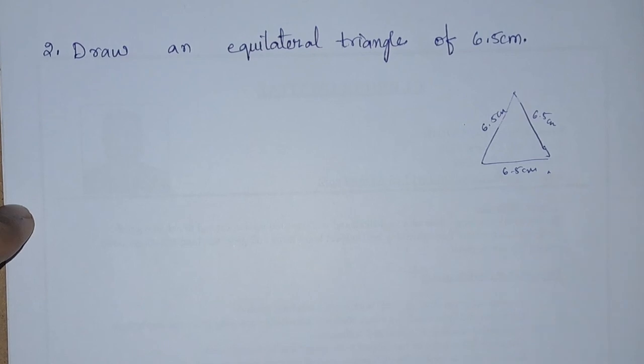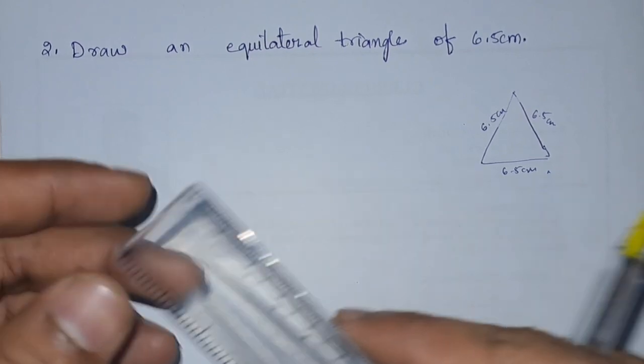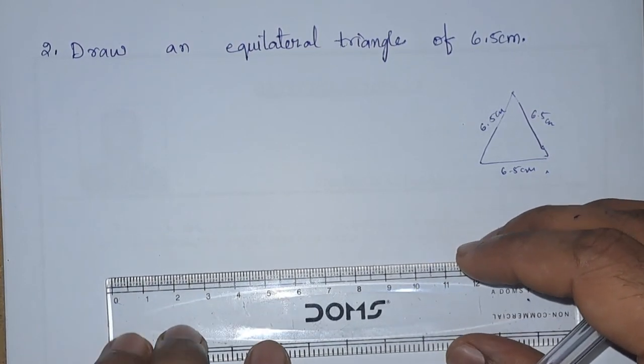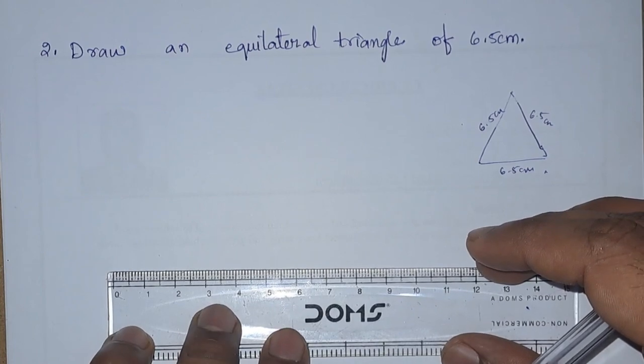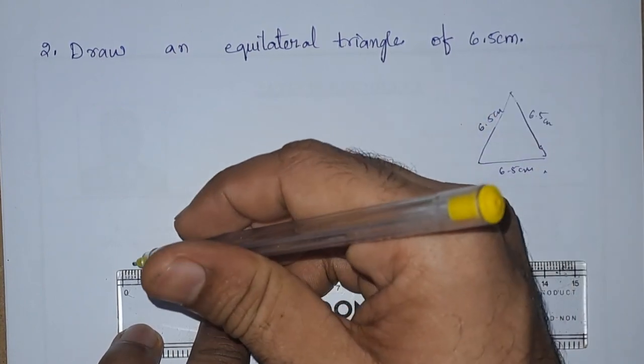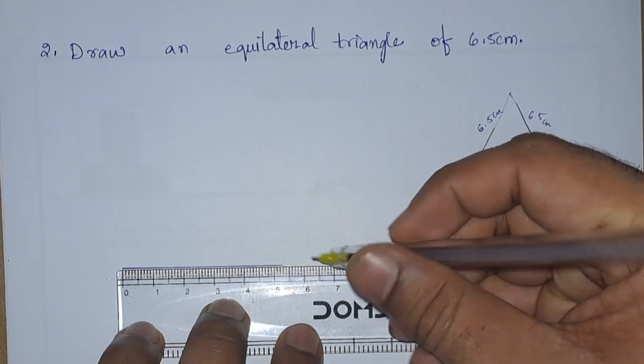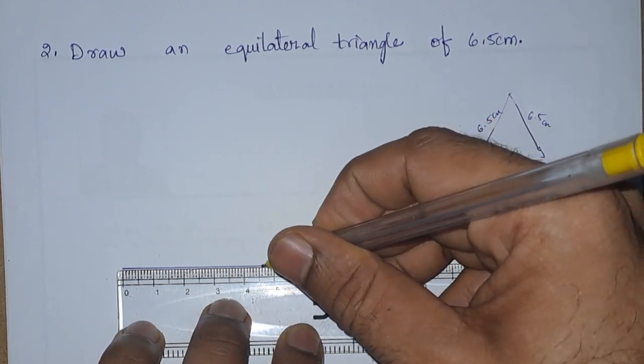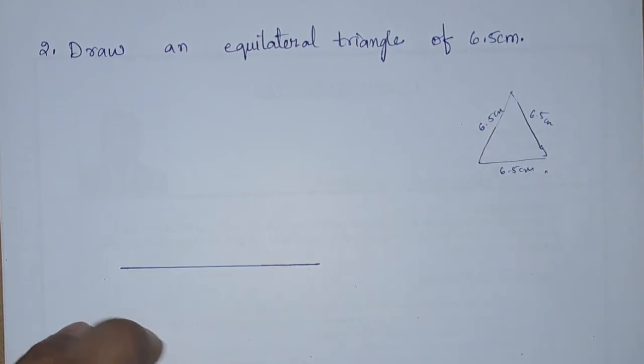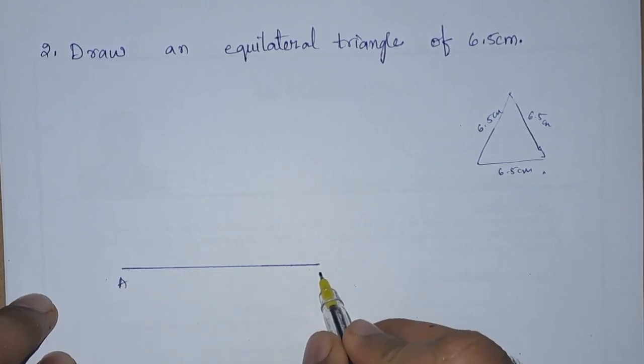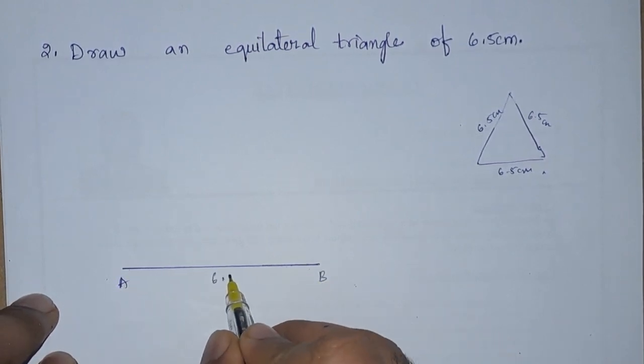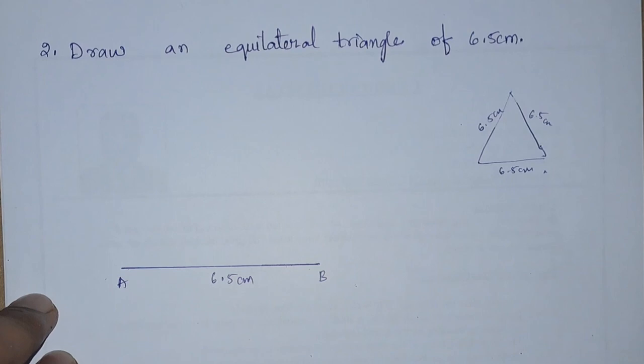All sides are equal. So first of all, I'm going to take the base as 6.5 centimeter. Let us draw 6.5 centimeter. This is our base, so AB is equal to 6.5 centimeter.